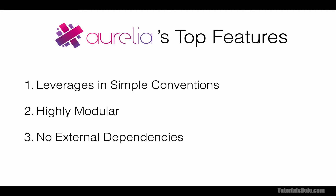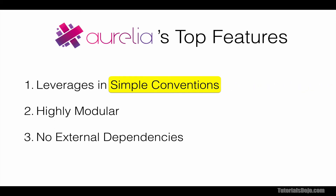For the first feature, Aurelia favors conventions over excessive configuration. By definition, convention means a way in which something is usually done. In the role of software programming, convention means the usual or common way of doing things. Think of it like this: a guitarist is playing a guitar by default, a teacher is teaching students by default, a programmer is programming computer applications by default, or a dog that barks by default. Because we already know the default behaviors or values of things, we don't need to specify them one by one in our codebase.